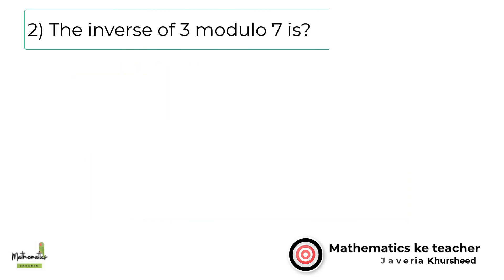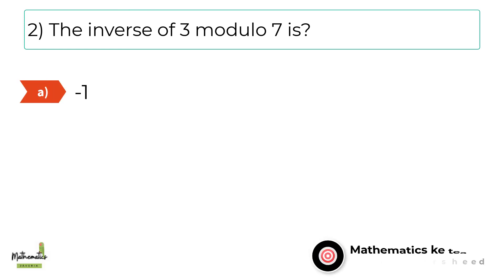Number 2. The inverse of 3 modulo 7 is. A, minus 1. B, minus 2. C, minus 3. D, minus 4.